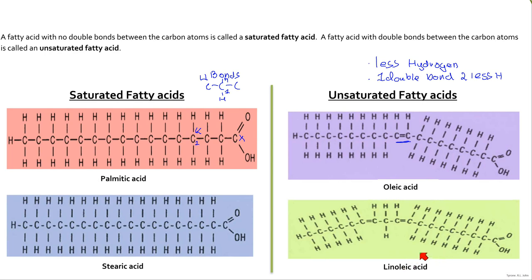If we look at linoleic acid, it has two double bonds and therefore it will have four fewer hydrogens compared to its saturated counterpart. So if you had two fatty acids with the same number of carbons but one was saturated and the other was unsaturated, the unsaturated one would have fewer hydrogens. The other thing to note is that when you have a double bond, it causes a kink in the hydrocarbon chain, which introduces some important properties into the lipid that unsaturated fatty acids form a part of.